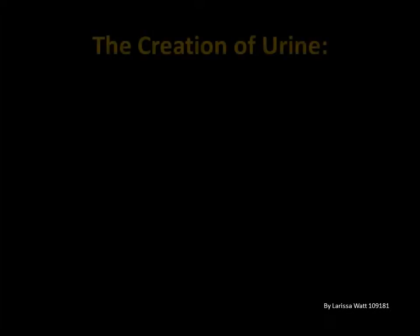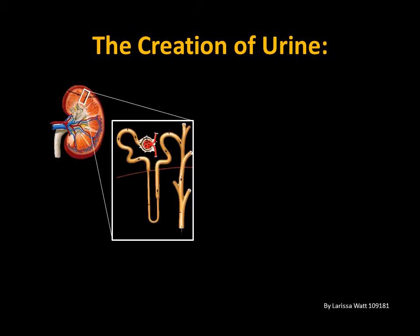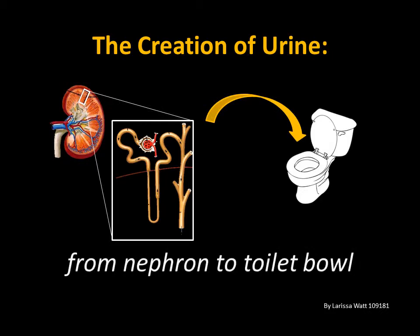Hello and welcome to the creation of urine. We're going to look at the smallest functional unit of the kidneys, the nephron. We'll also discuss the filtration, reabsorption and secretion which creates urine and follow its journey through the renal system all the way from the nephron to the toilet bowl.